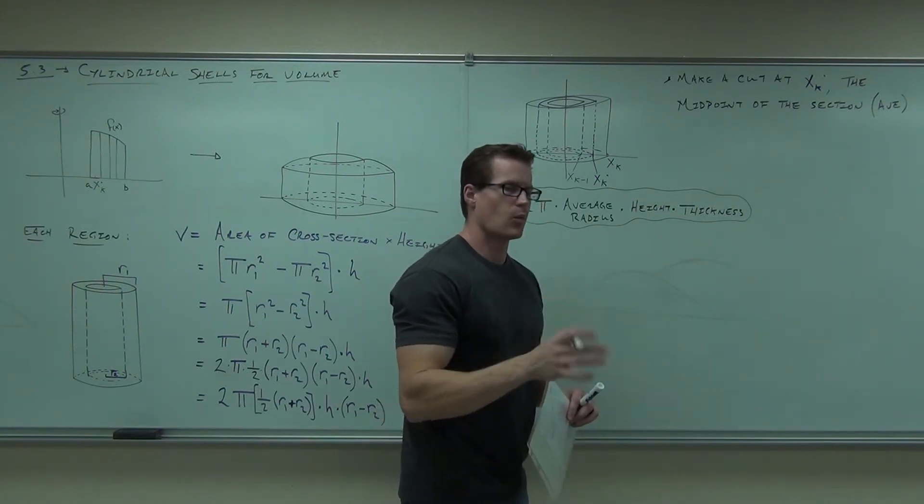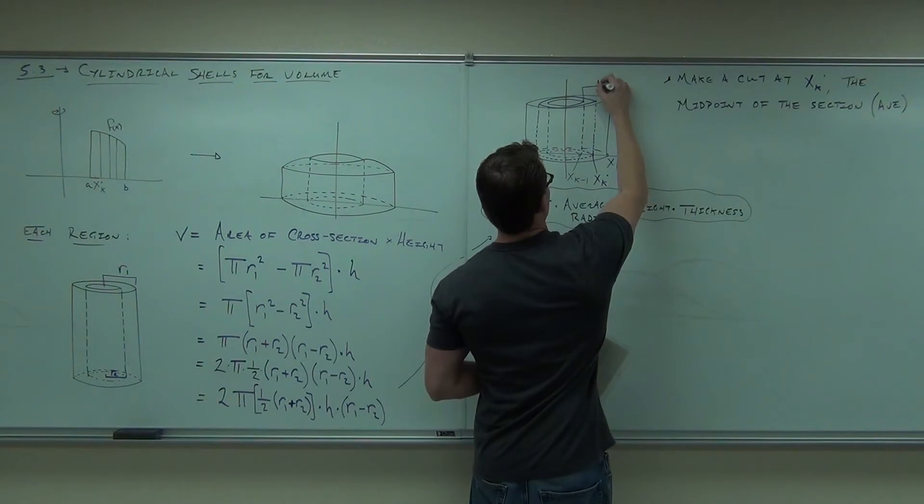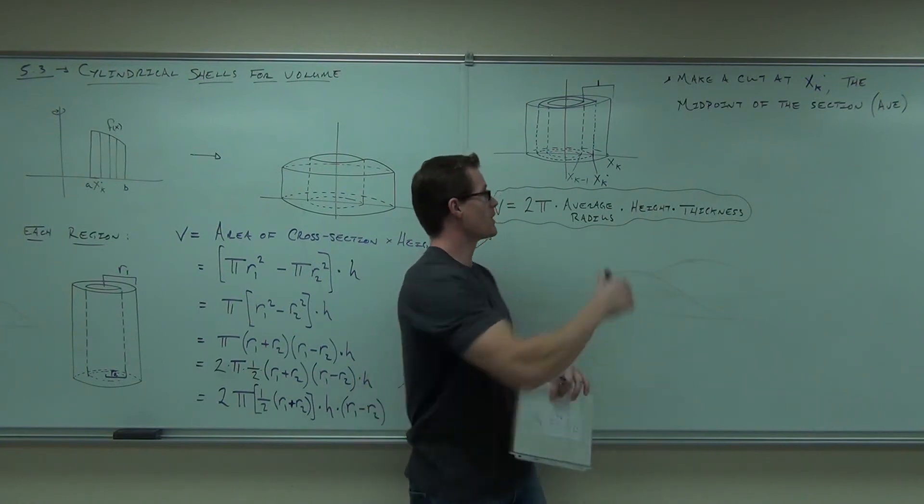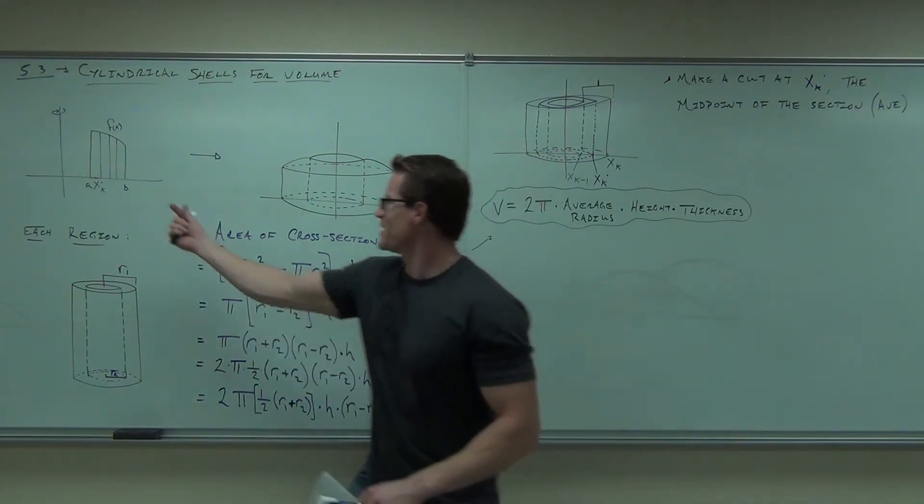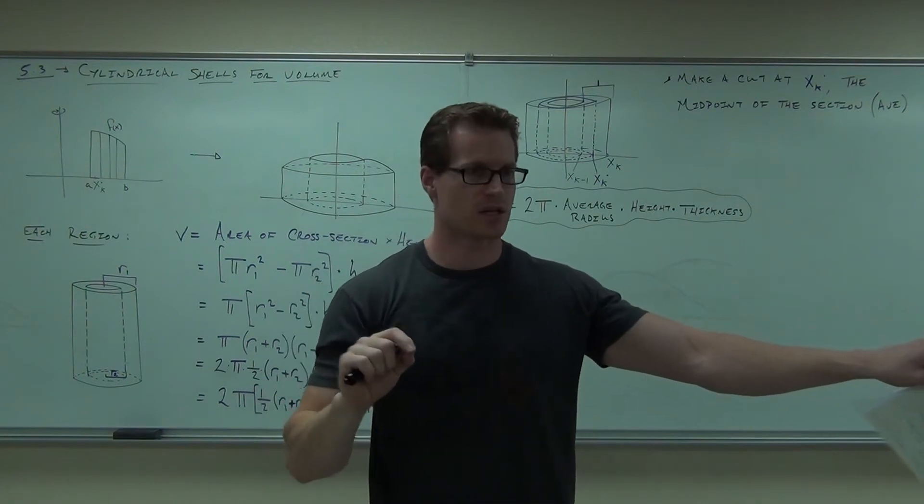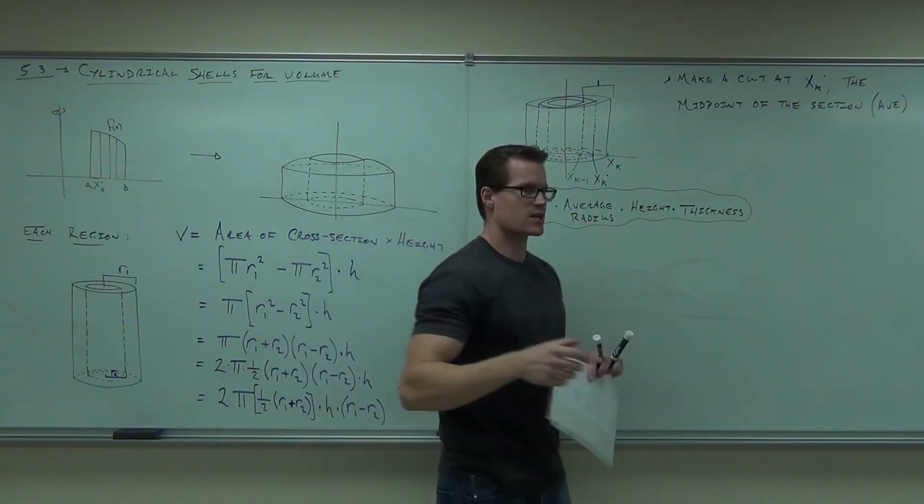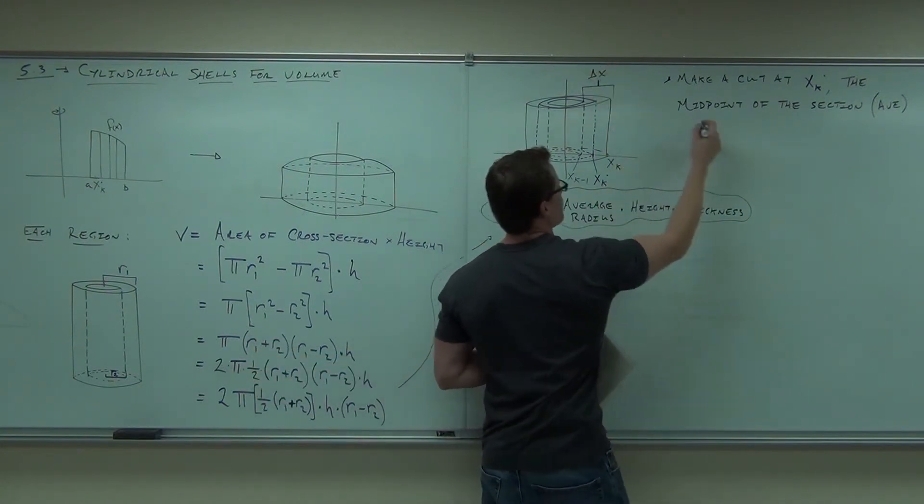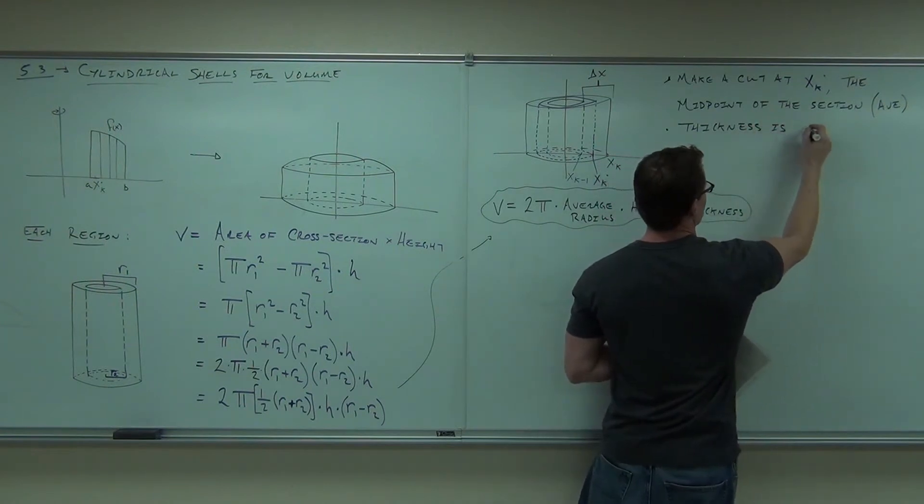Only two more things we have to do. What is the thickness? What's the thickness from here to here? It's x_k minus what? x_k minus 1. Very good. By definition, what's the thickness of any cut? Delta x. Remember delta x? We took a thickness of our cut. It was always delta x. The thickness of our cut here is delta x, and we're revolving that delta x around. Delta x, by definition, is x sub k minus x sub k minus 1. That's what it is. So this is delta x. Thickness is delta x.